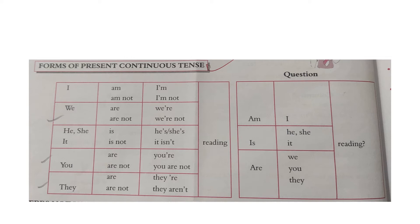'Are they reading the book?' — interrogative in present continuous tense. Again, if we try to jumble the given table, for example 'Is I reading the book?' is a wrong sentence. The correct sentence is 'Is he/she/it reading the book?'